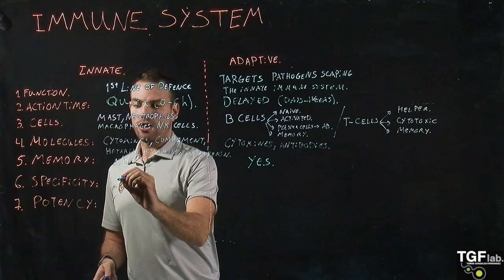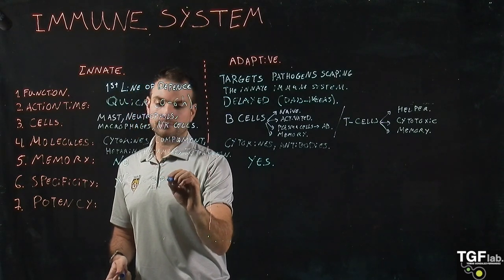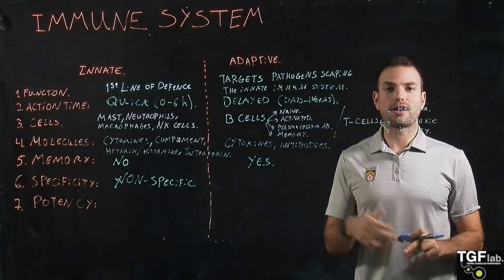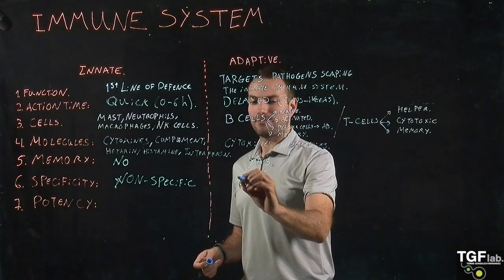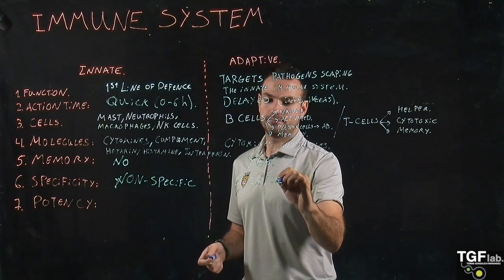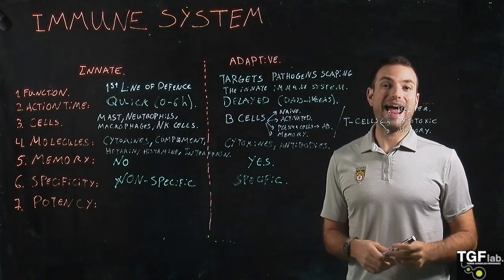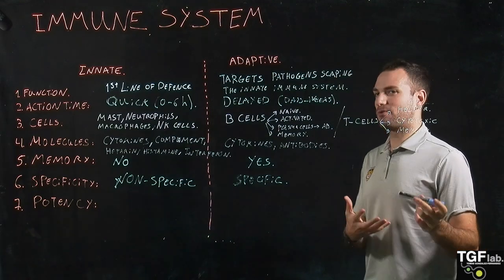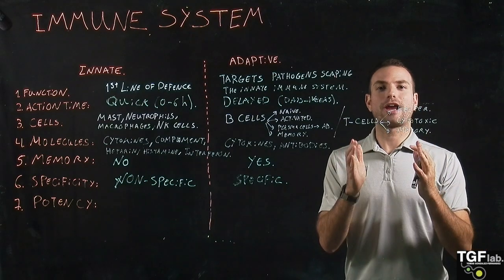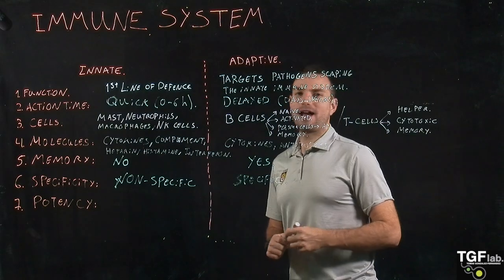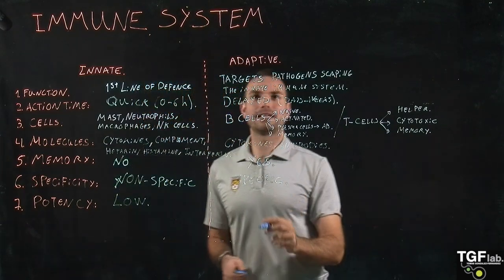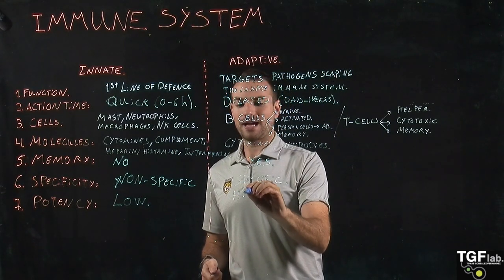In terms of specificity, the innate immune system is non-specific — it attacks every virus or pathogen that enters the organism. The adaptive immune system, however, is very specific. Thanks to antibodies recognizing specific antigens and helper T cells recognizing the major histocompatibility complex, it can target specific infections and maintain memory. Finally, the potency of the innate immune system is low, but the potency of the adaptive immune system is very high due to its memory and specificity.